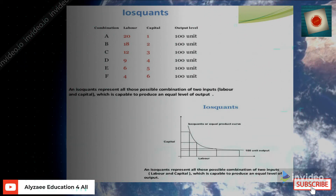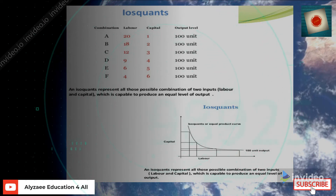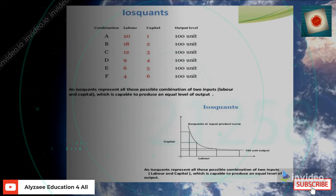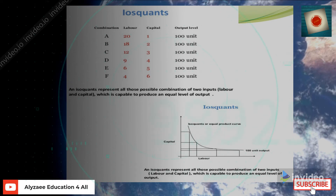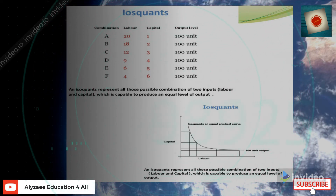The main point to understand is that on an isocost, output level remains the same across different combinations. As an example using students: previously, a person studying manually would use their labor for 5 to 6 hours, whereas with technology they could do the same work in 3 to 4 hours.